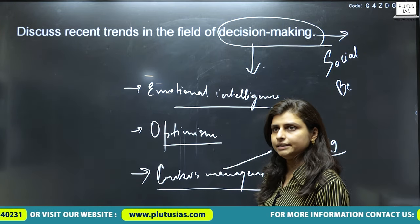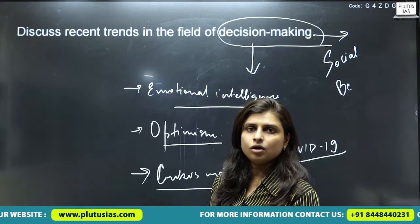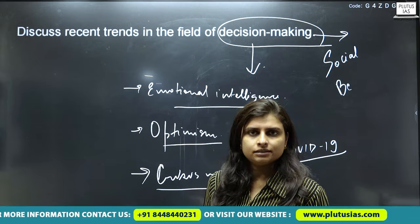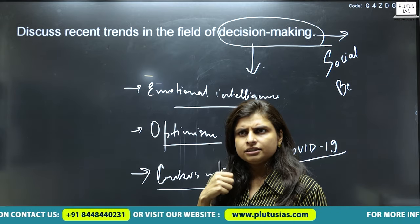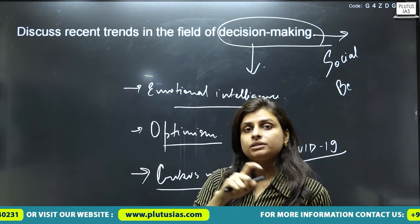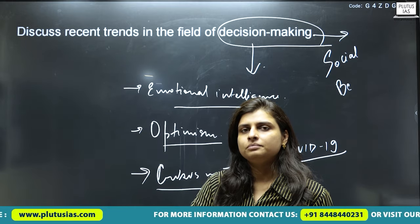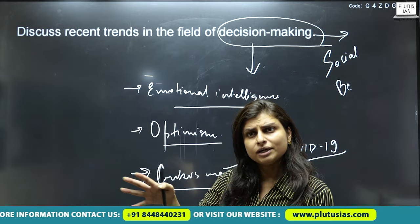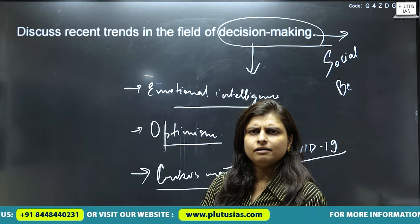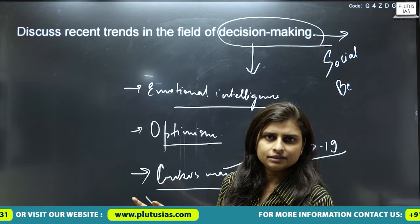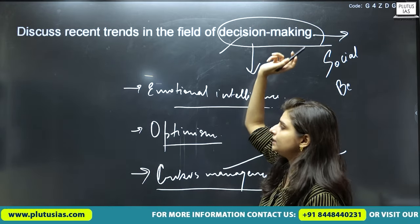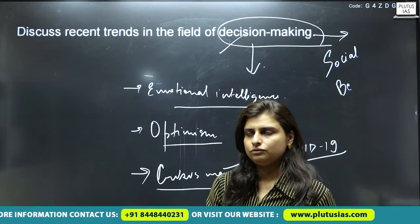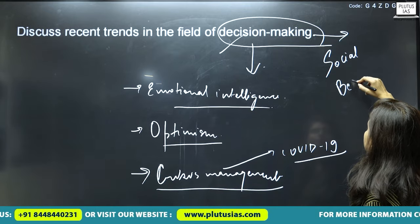Social behaviorism explains that decision making depends on the person's behavior — some people are very calm, others are very aggressive. The decisions made by a calm person will be extremely different from those made by an aggressive person. So social behaviorism is playing a big role in decision making.